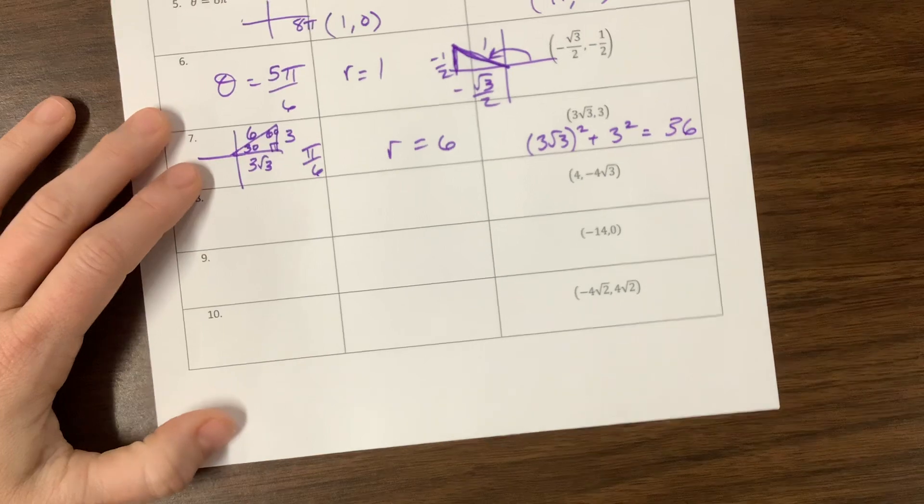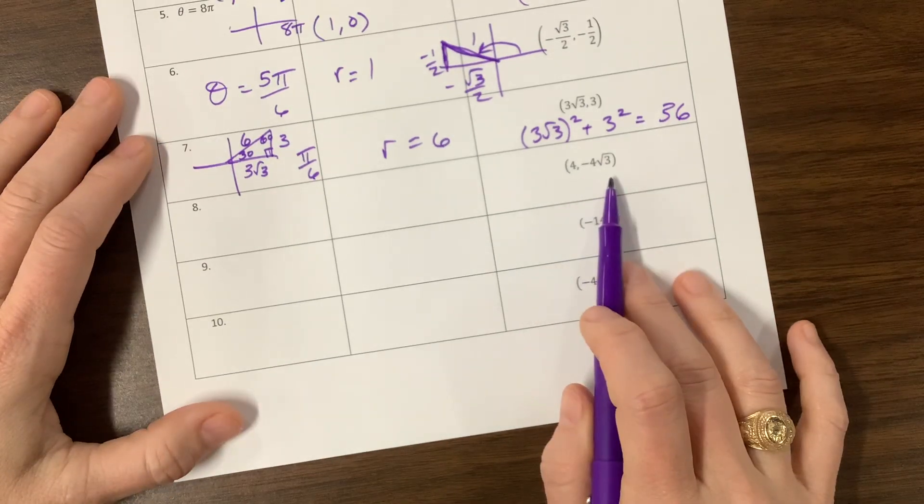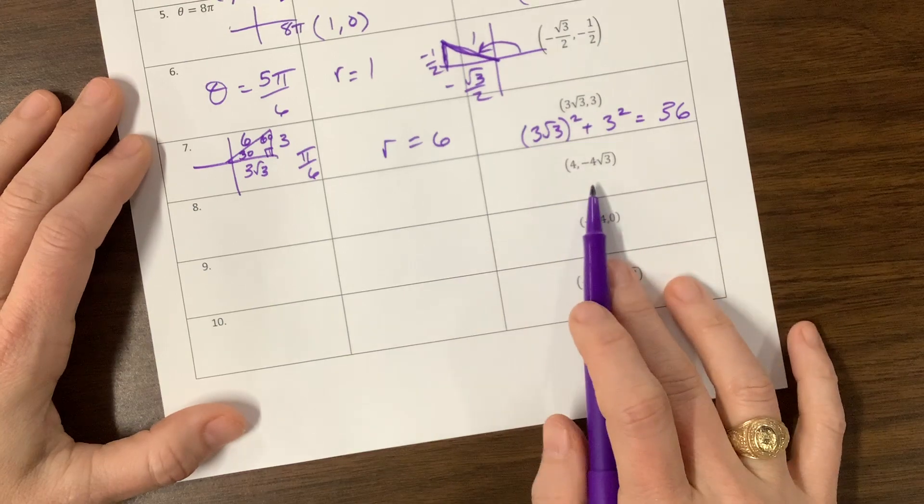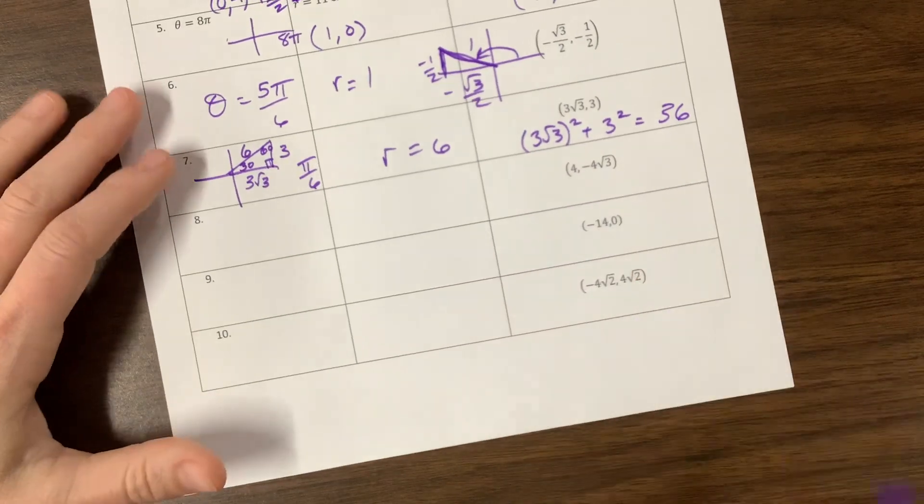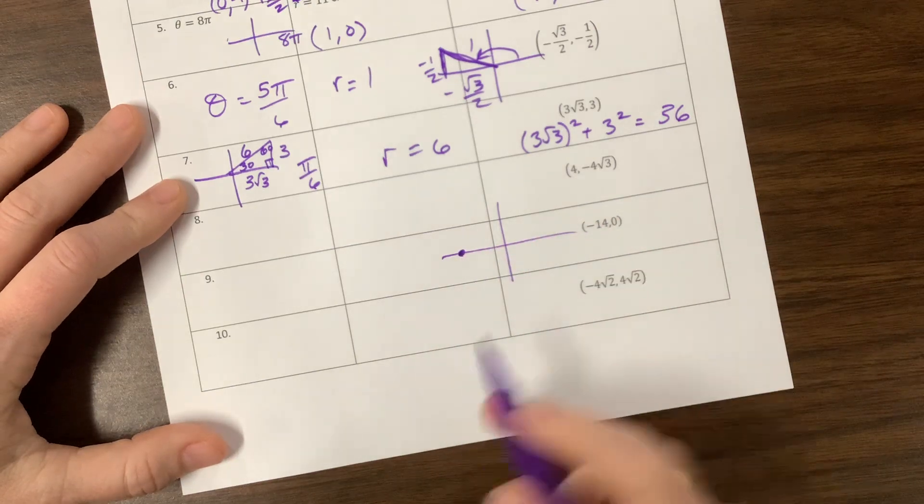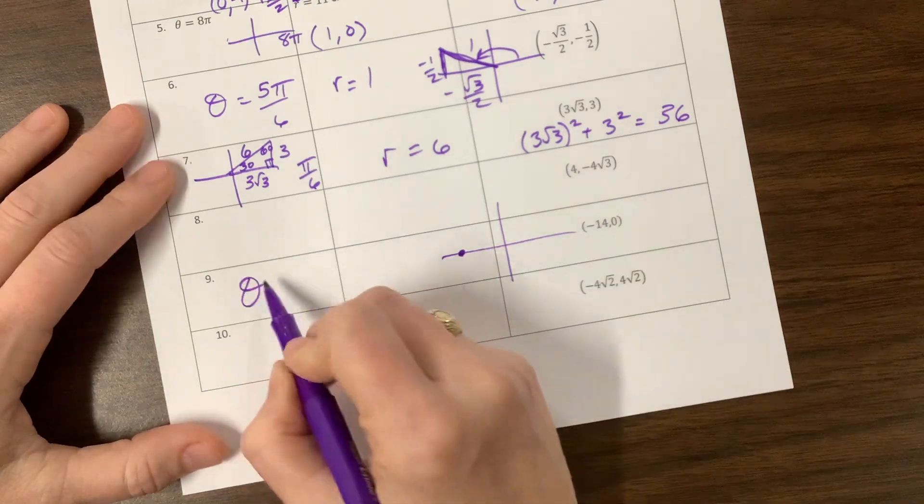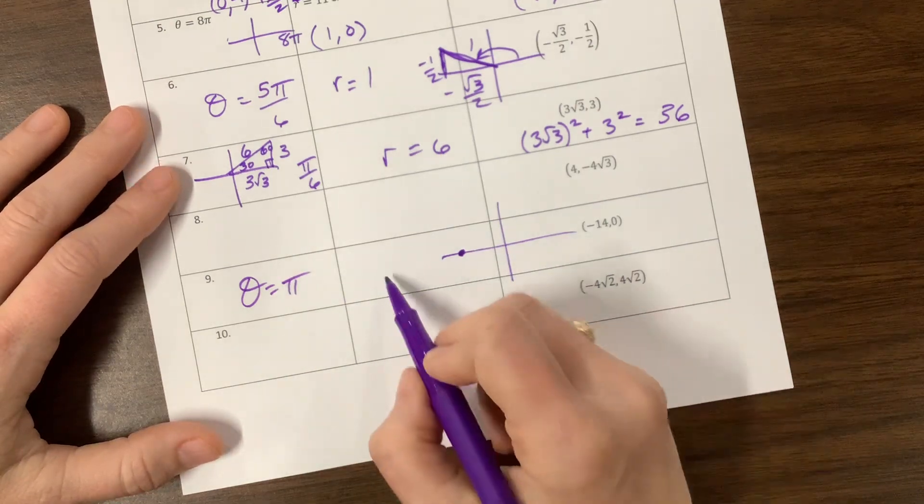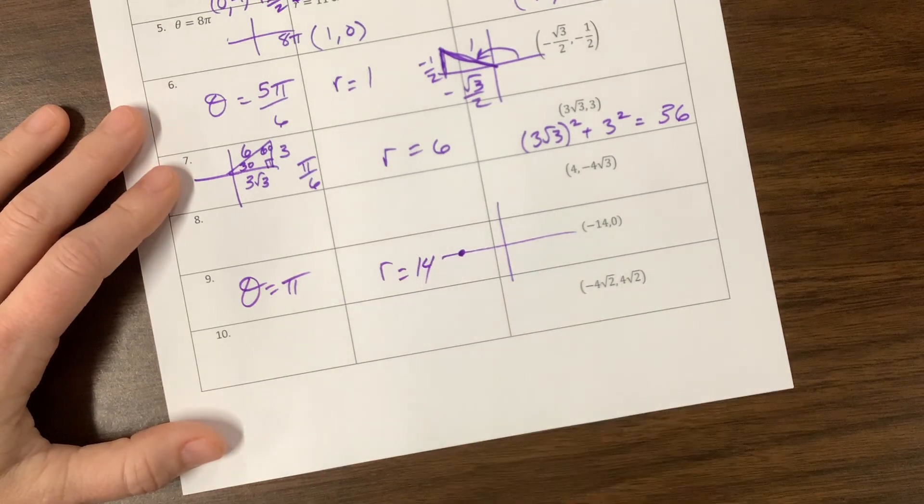This was the π/6 family, this is probably the π/3 family. I don't feel like doing it. This one—if we're at negative 14, 0, we're over here. So what's our angle? π, or anything coterminal to that. What's our radius? 14.